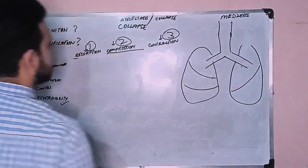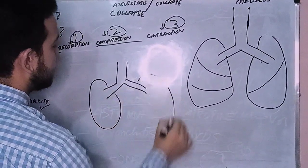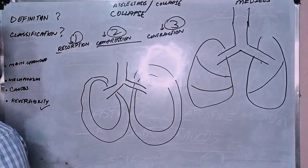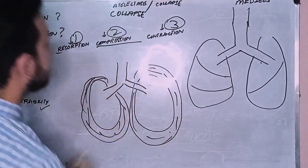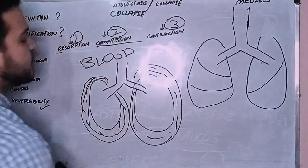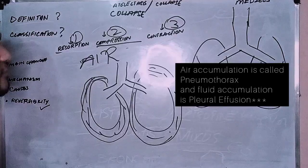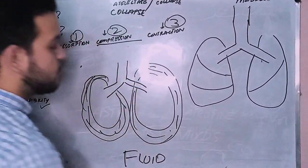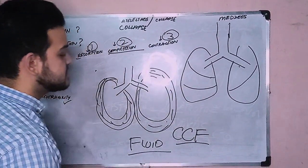The second type is compression atelectasis. Consider that these are your lungs, and there is something around them not allowing them to expand. This can be air, blood, or fluid. If it's blood, it is due to trauma. If it's air, it is also due to trauma and we call it pleural effusion. If it's fluid, it can be due to congestive cardiac failure, written as CCF, where blood doesn't drain properly from the lungs.